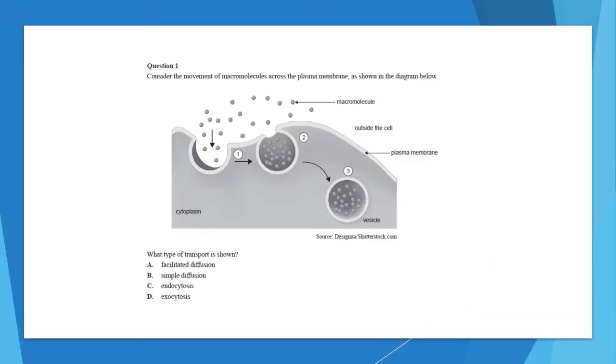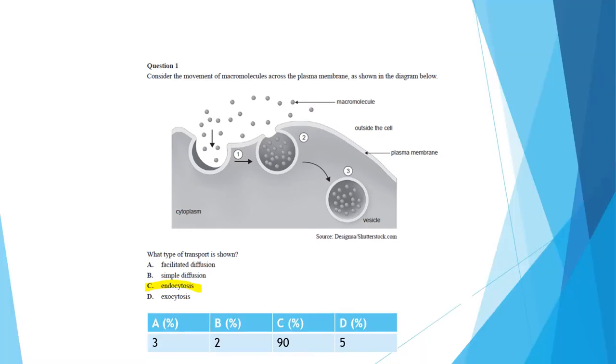Question 1 provides a picture of a cell where macromolecules outside the cell are in subsequent steps being transported into the cell via the formation of a vesicle. The question asks what type of transport is shown and the correct answer is of course endocytosis. This was a well answered question with 90% of the 2019 cohort answering correctly. Facilitated diffusion refers to the passage of substances via membrane protein channels. They differ from active transport which requires the expenditure of energy. Consequently, active transport can move substances against a concentration gradient whereas facilitated diffusion cannot.